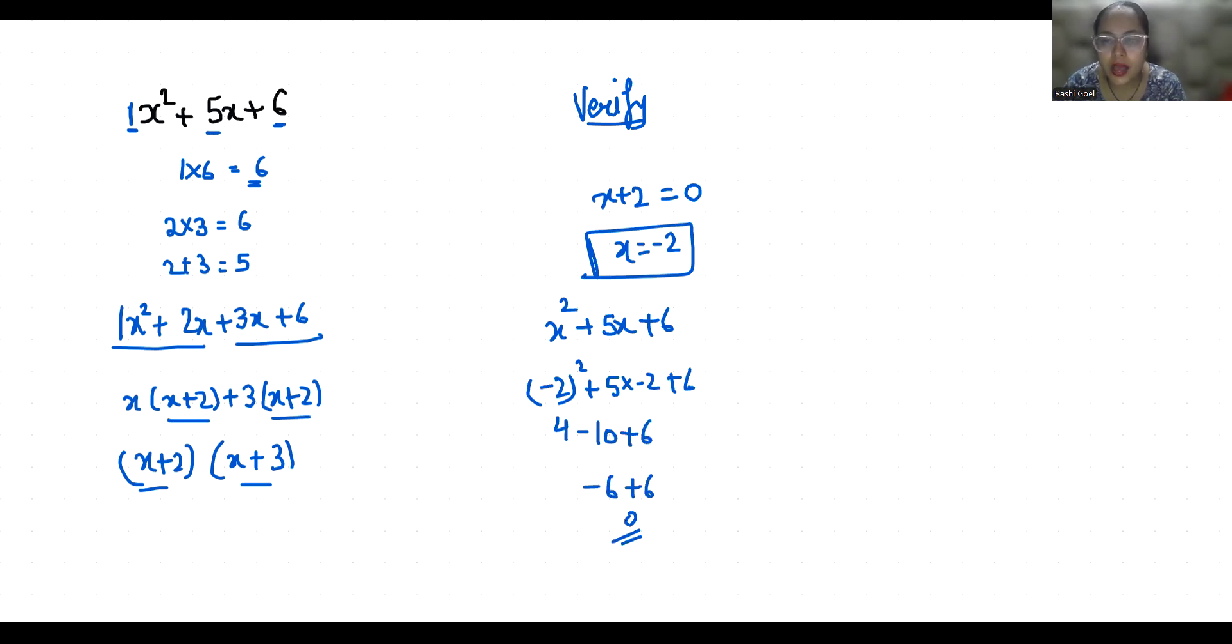Now x plus 3 equals to 0, x equals to minus 3. So minus 3 square plus 5 times minus 3 plus 6, it is 9 and it is minus 15 plus 6, minus 6 plus 6, that is 0.